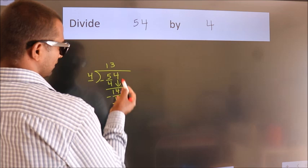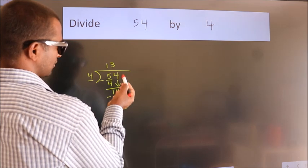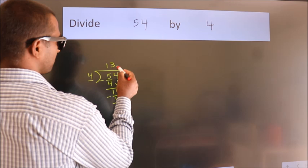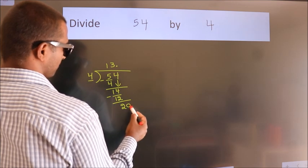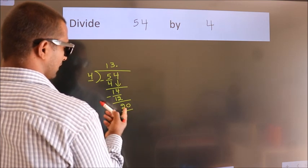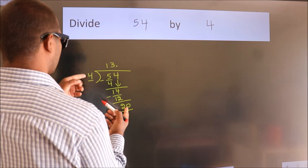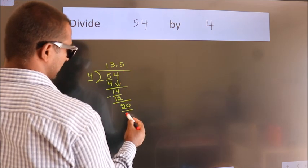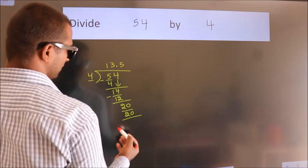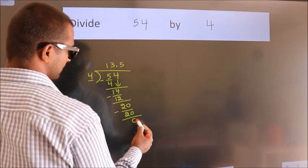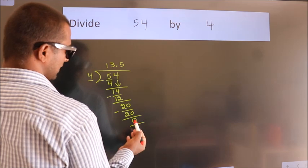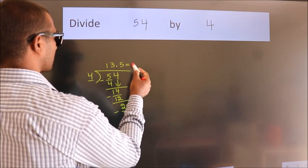After this, we don't have any more numbers to bring down. So what we do is we put a dot and take 0. So 20. When do we get 20 in the 4 table? 4 times 5 is 20. Now we subtract. We get 0. Now we got remainder 0, so this is our quotient.